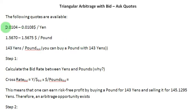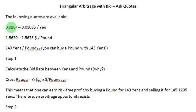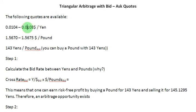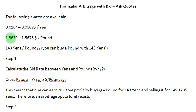In these two quotations, this number 0.0104 is the bid rate for yen — if you have a yen to sell, you are going to get 0.0104 dollars in return. And this number is the ask rate for yen — if you want to buy a yen, you have to spend 0.0108 US dollars for it. Likewise, this is the quotation between dollars and pounds, where this number is the bid rate and this number is the ask rate.